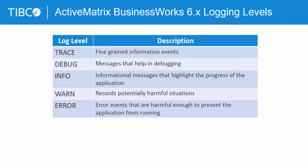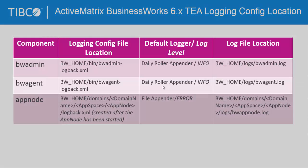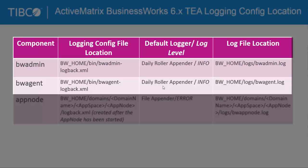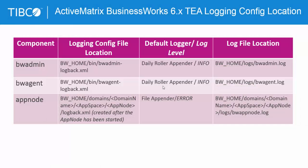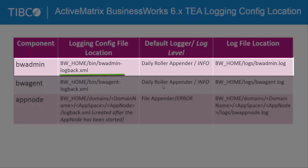Now let's see the logging configuration on the TEA, that is TIBCO Enterprise Administrator side. Here the log files created by BWAdmin and BWAgent are written to the BW_home/logs folder. If you contact TIBCO support, your support representative will most likely ask you to send the appropriate log file. BWAdmin creates a log file called bwadmin.log written to the BW_home/logs folder. The BWAdmin log file is created on installation with the default logger as daily roller appender and log level as info. The logback configuration file is BW_home/bin/bwadmin-logback.xml.